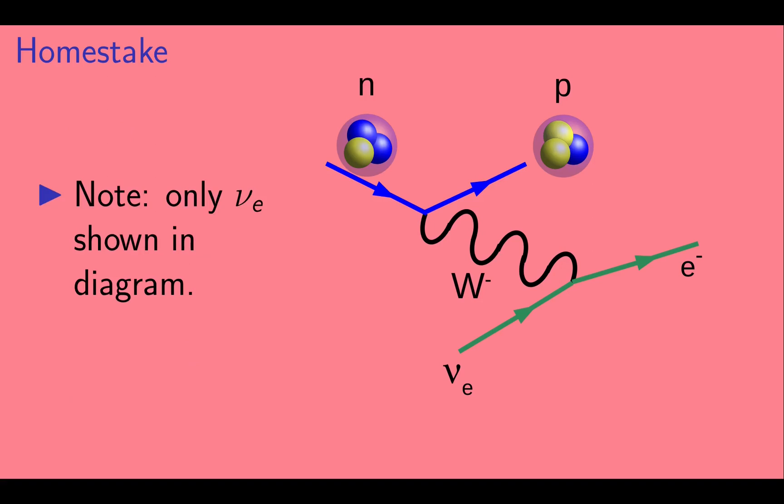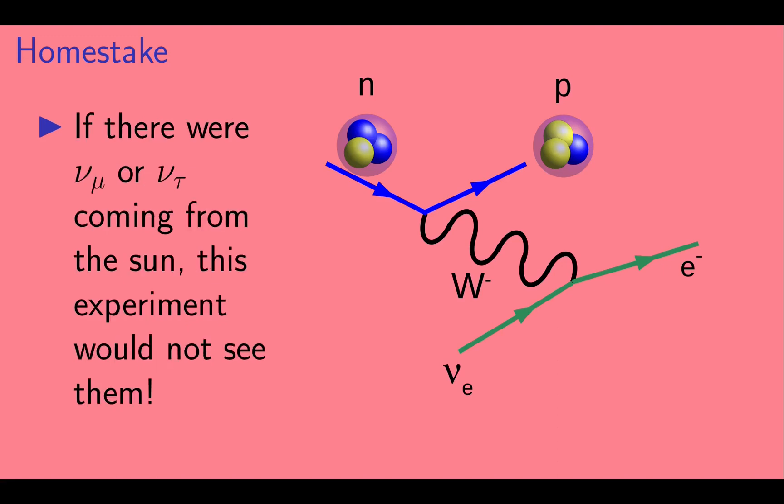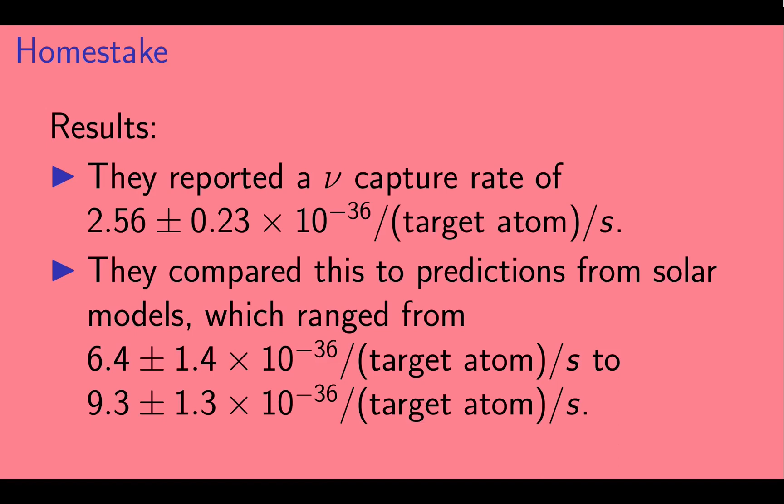Note that we only included electron neutrinos in this diagram. As we mentioned earlier, solar neutrinos have energies of order MeV. They don't have enough energy to make a muon or a tau. So, a muon or tau neutrino would not be able to participate in this interaction. This means that if there were muon or tau neutrinos coming from the Sun, this experiment would not be able to see them.